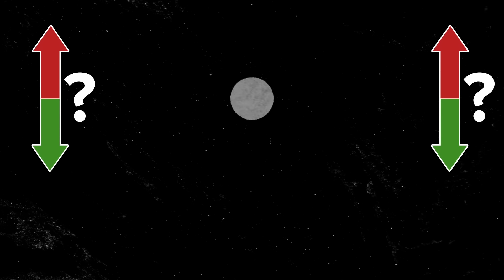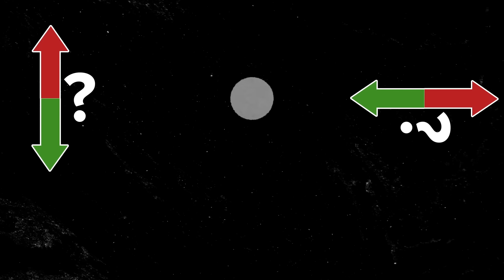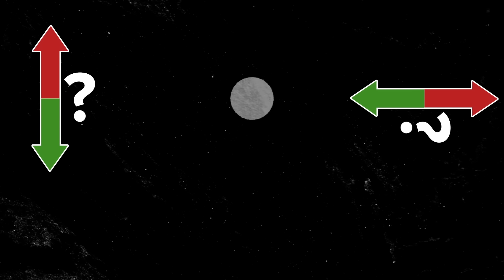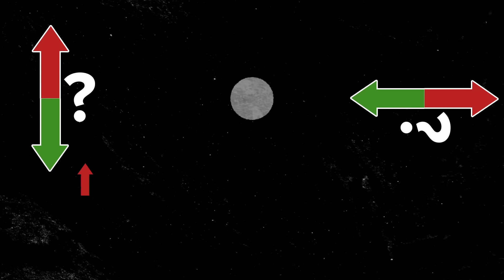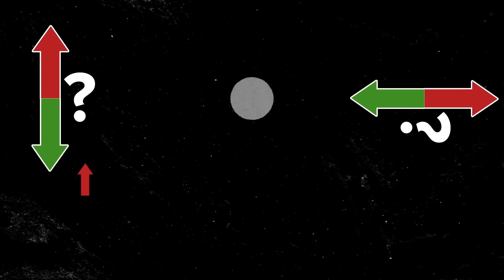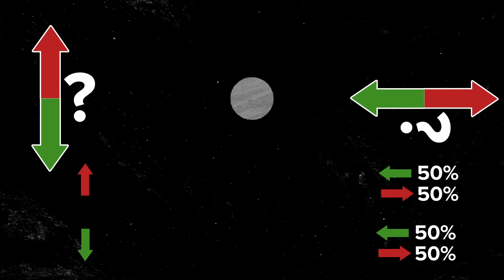Instead of measuring up or down, you could take your experimental apparatus and turn it on its side, so instead of asking 'is it up or down?' you're asking 'is the spin left or right?' If we leave one Stern-Gerlach apparatus the same but turn one sideways, and this particle measures up, what the other particle really 'wants' to be is down — but we're not asking that question. So you find it's 50/50 whether it's left or right, regardless of what the first result was.